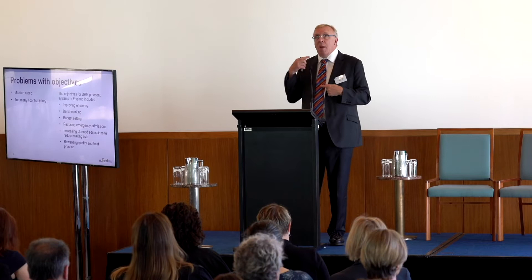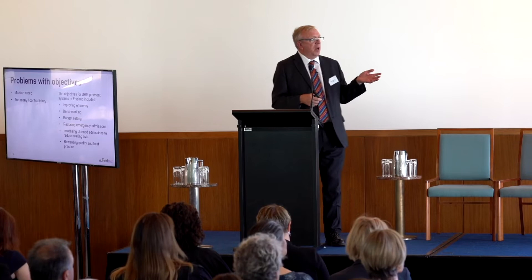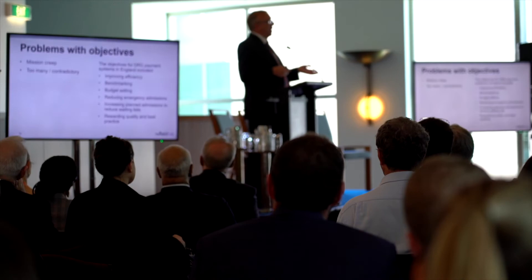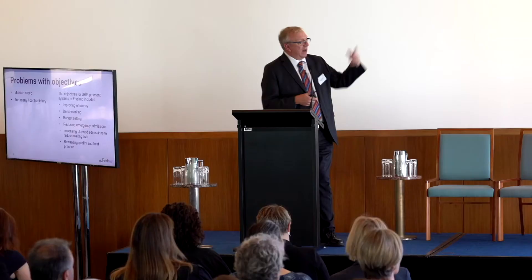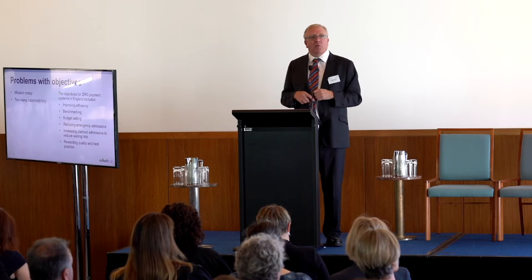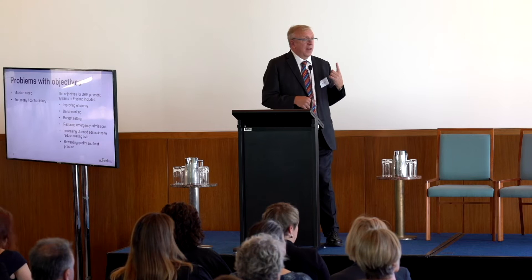Looking at the objectives for the DRG payment system in England, it has more objectives than any other DRG system in Europe — most normally had two, whereas England had many more. Notably, it contains two contradictory objectives: one is to increase elective admissions, and the other is to decrease emergency admissions, using the same instrument.